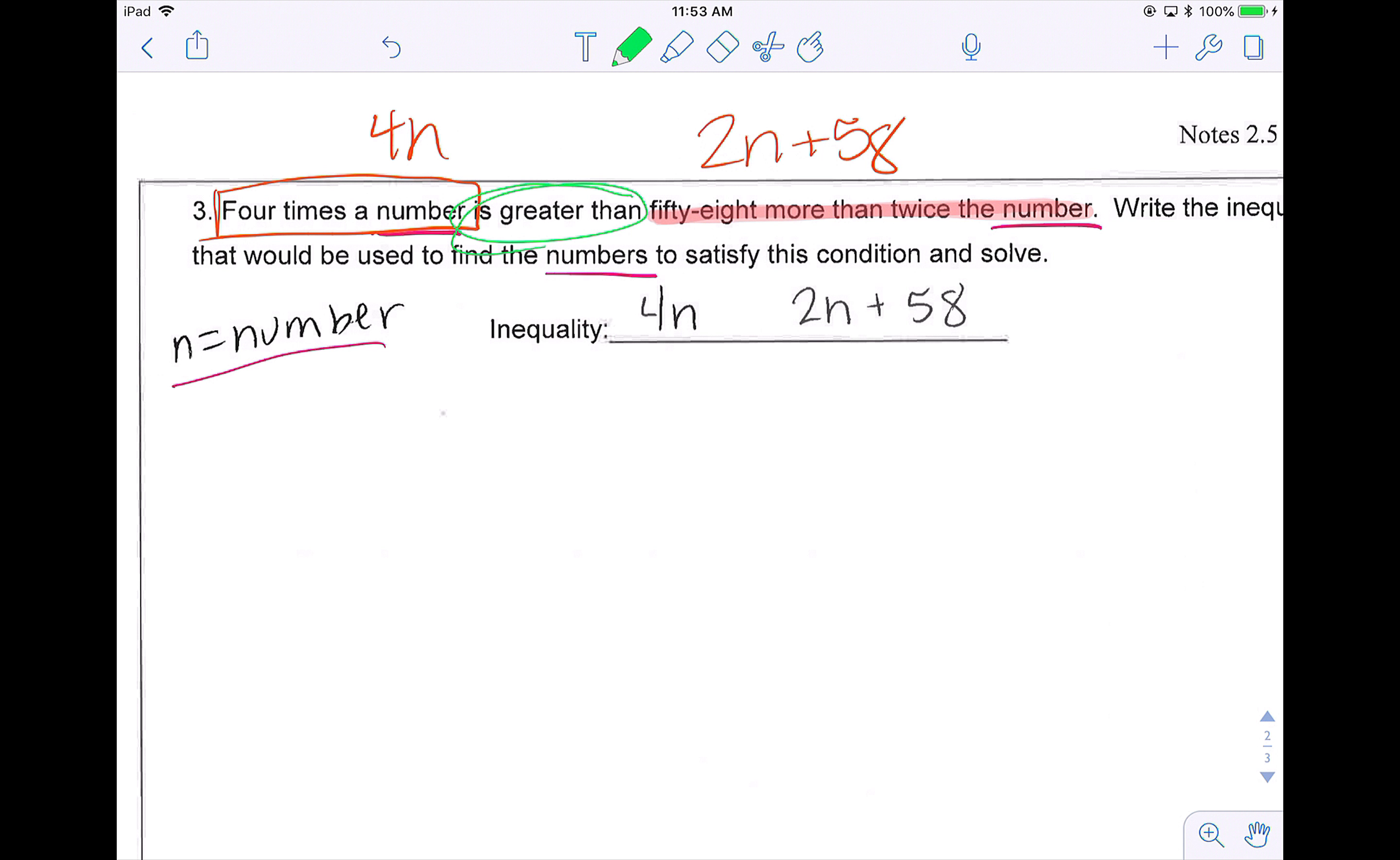So the greater than sign, remember, less than looks like an L that has been slightly shifted. So greater than is going to go the other way. So four times a number is greater than 58 more than twice the number.